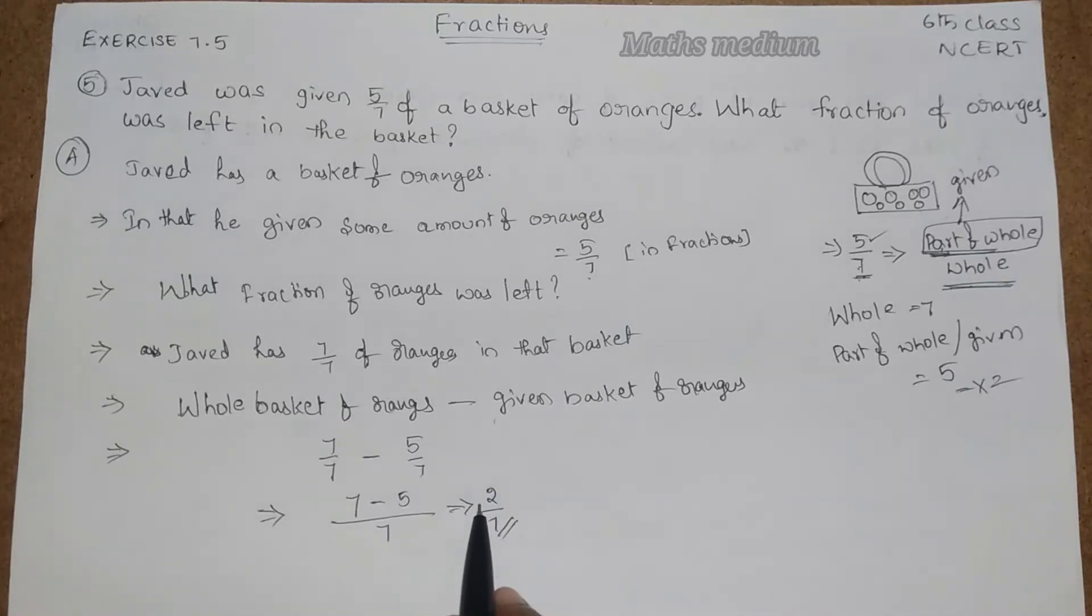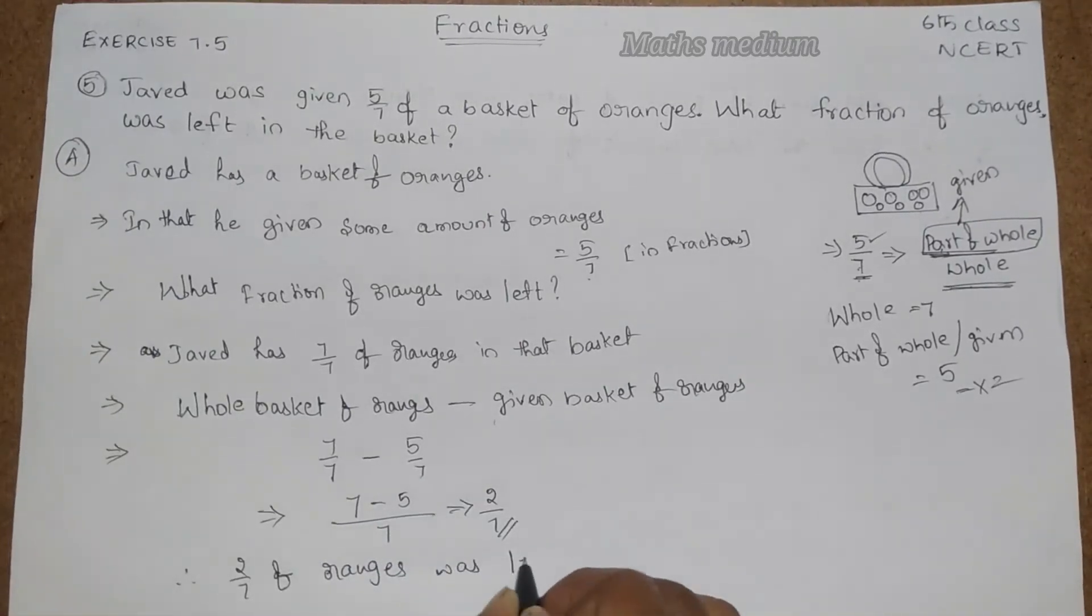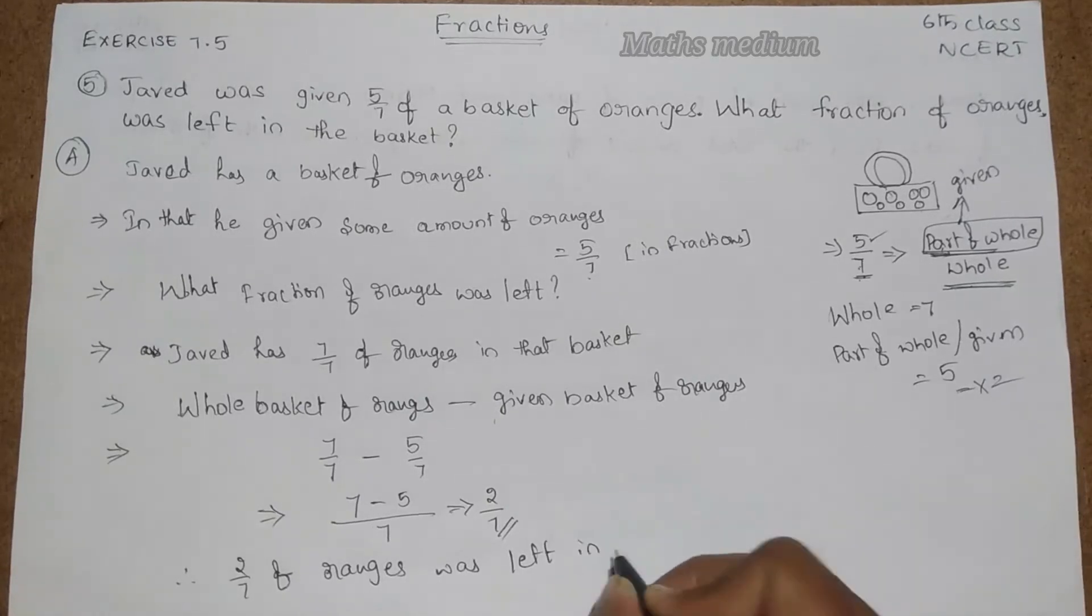So here 2 in that basket of remaining oranges. So answer is therefore 2 by 7 of oranges was left in the basket. So this is the answer for this question.